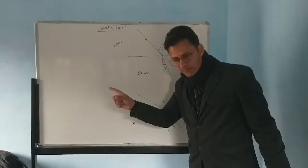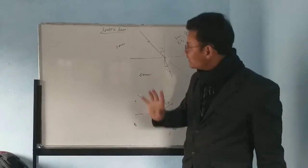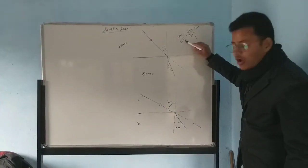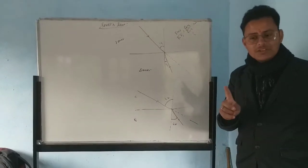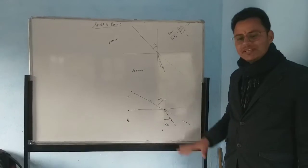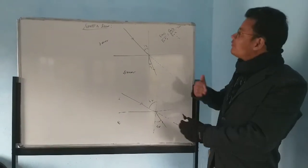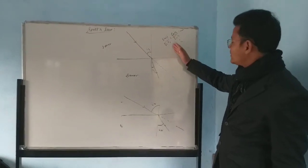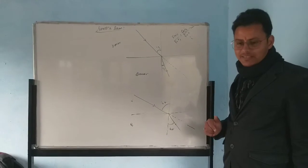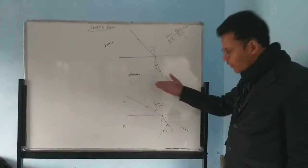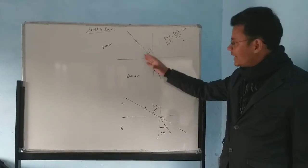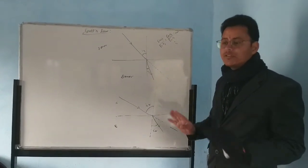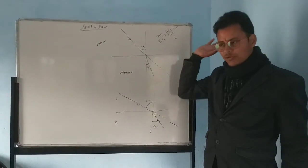Let me explain Snell's Law again. Snell's Law says that the ratio between the sine of the angle of incidence and the sine of the angle of refraction is always constant if the medium is not changed. There will be further derivation of Snell's Law, in which the sine of the angle of incidence divided by the sine of the angle of refraction will be equal to the refractive index. But right now, we have to know that this ratio will always be constant if the medium is not changed. So this is all about Snell's Law.